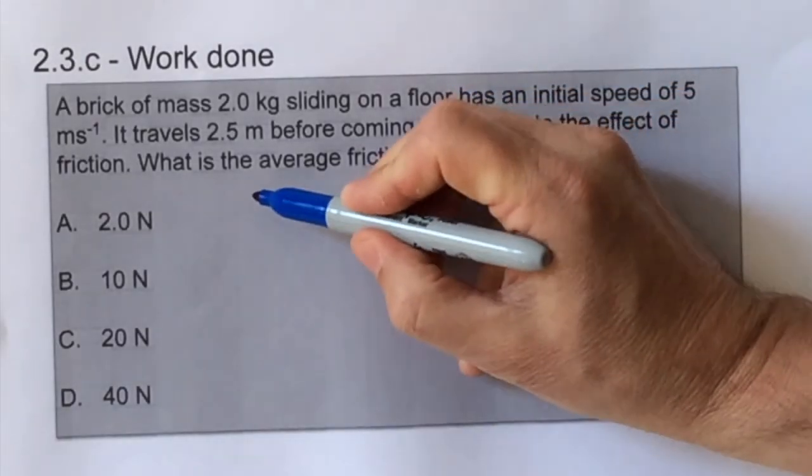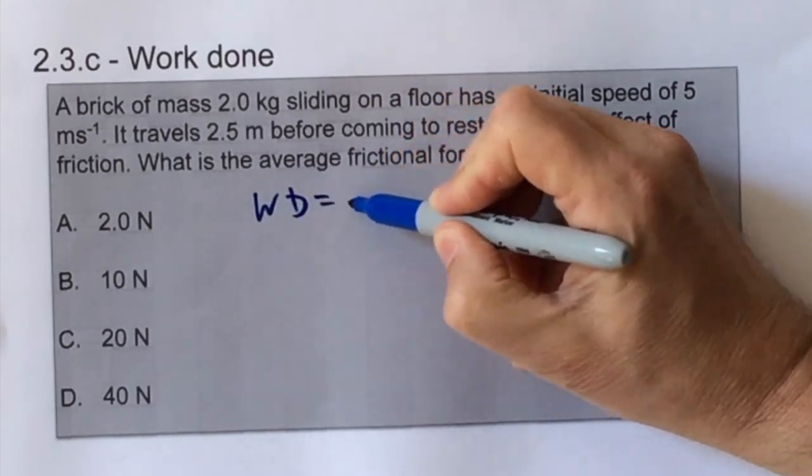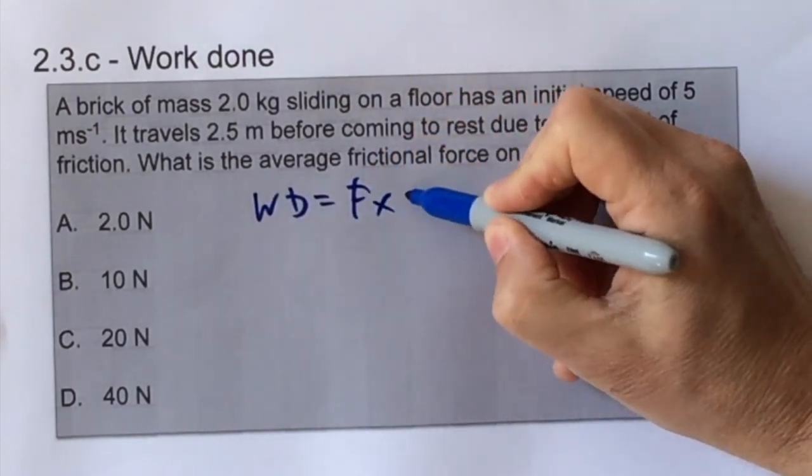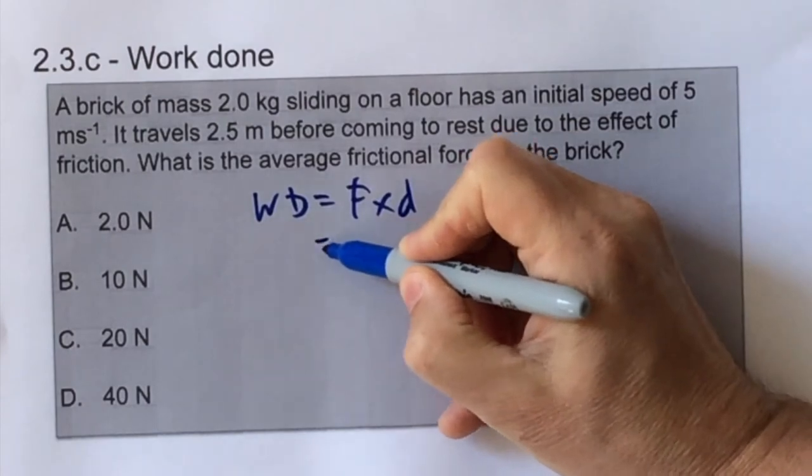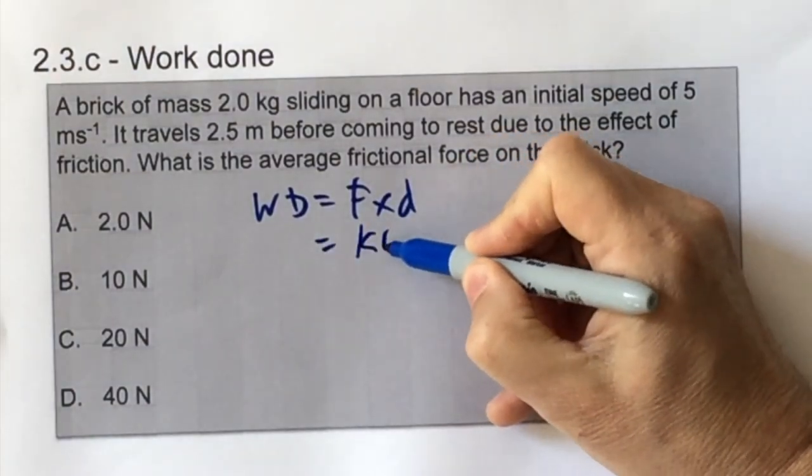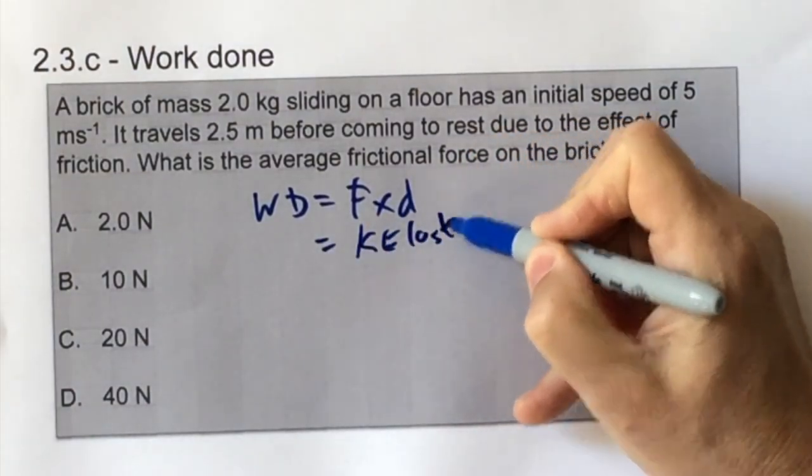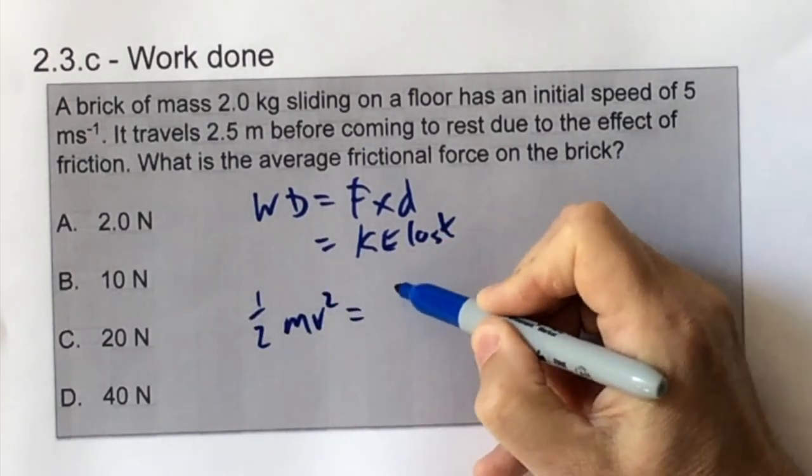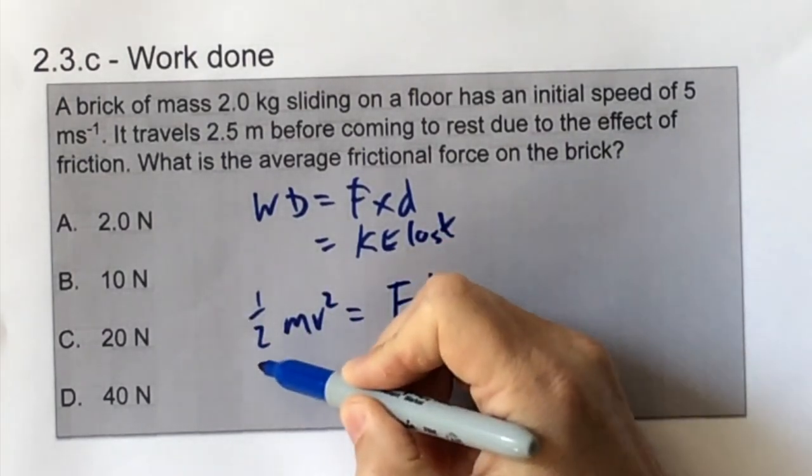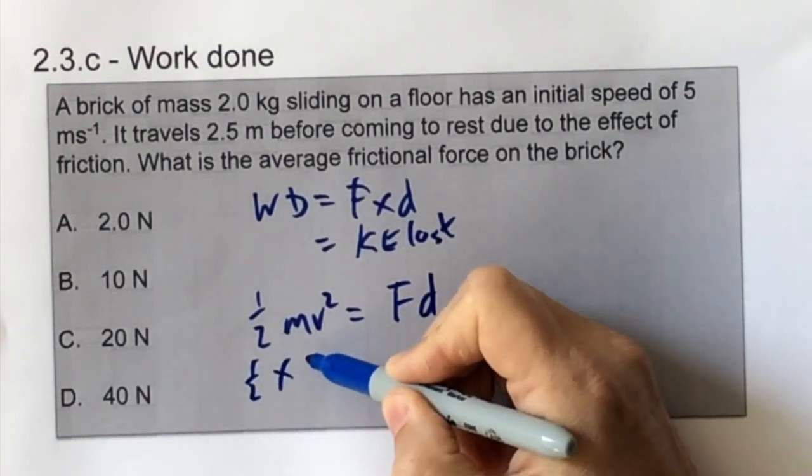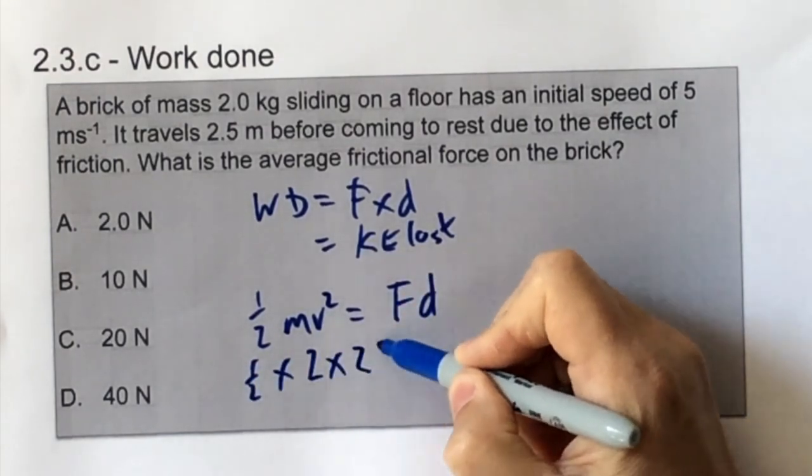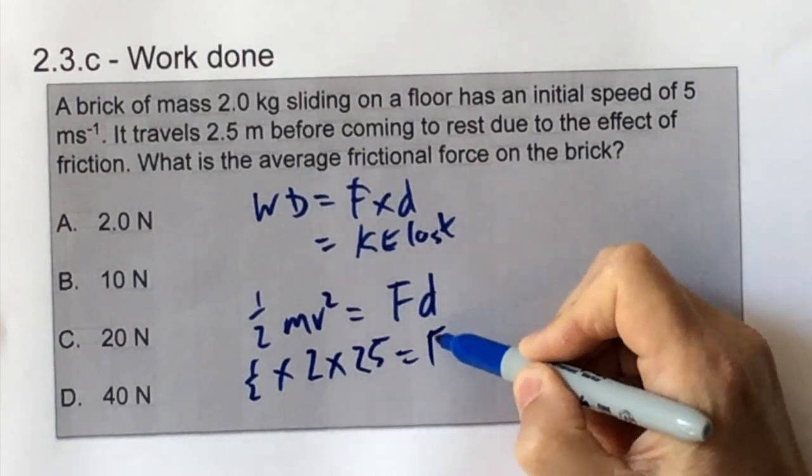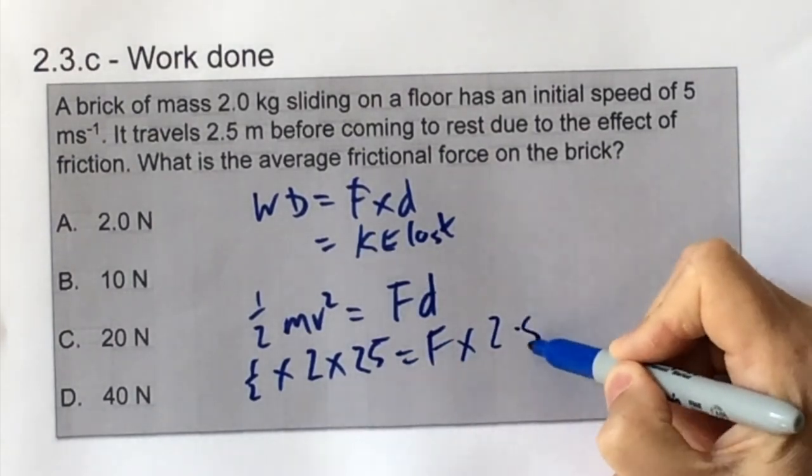Here the work done to slow down the brick is equal to the kinetic energy lost, and we can equate those two. So we say the formula for kinetic energy, half mv squared, is equal to the formula for work done, F times d. And then we can substitute in all of the numbers that we have. And that leaves us with F, which is the average force since we don't know whether it's constant, and it's 10 newtons.